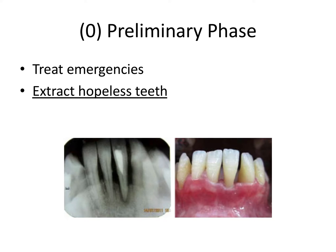Let's talk about the five phases of periodontal treatment planning. The first one I label zero, because it's coming before the actual periodontal treatment — this is the preliminary phase. In the preliminary phase, we want to treat emergencies, such as urgent care needs like an endodontic or periodontal abscess, and to extract hopeless teeth.